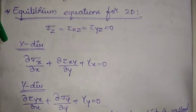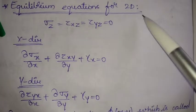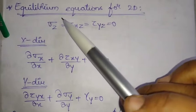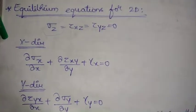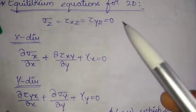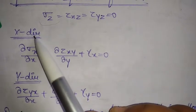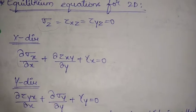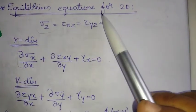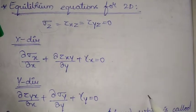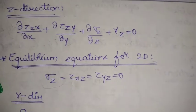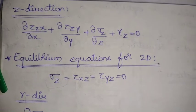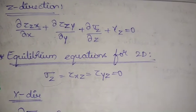For the 2D plane, we do not consider stresses in the z-direction — tau xz and tau yz are ignored. The equilibrium equation in the x-direction simplifies accordingly, and similarly for the y-direction. These are the equilibrium equations for a 2D plane. That is it for this video — please like, share, comment, and subscribe to the channel.